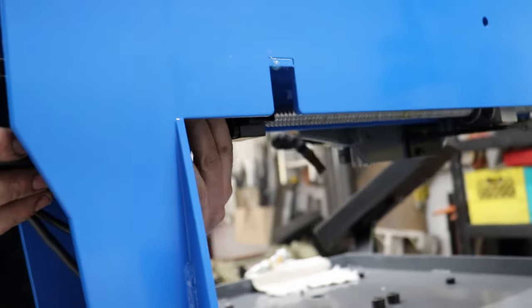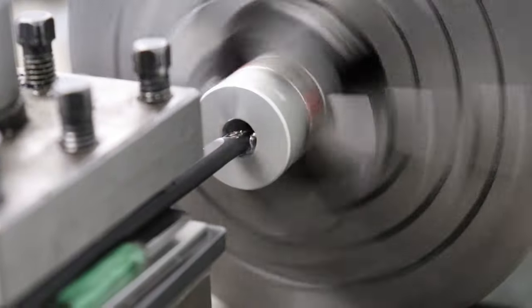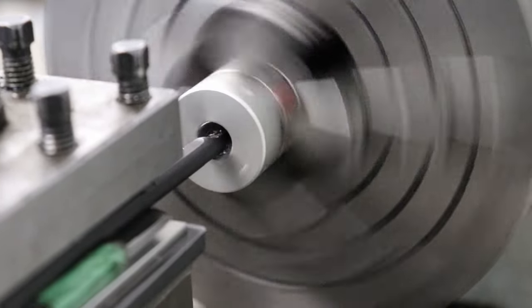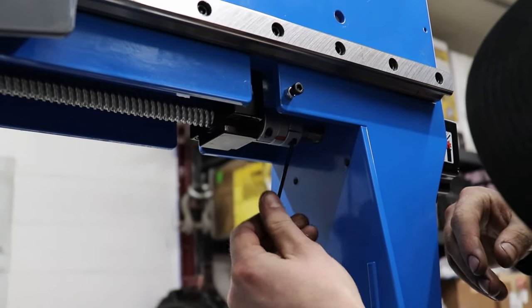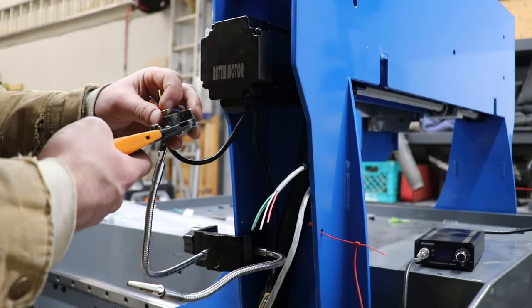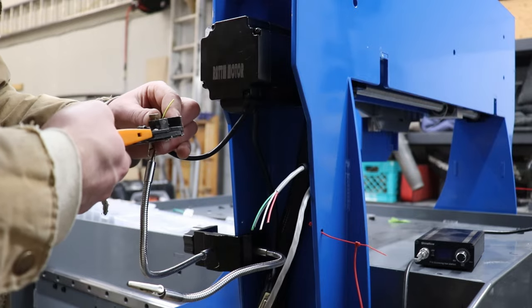The motor can then be installed with some modification to the coupler. This wouldn't have been necessary, but I bought the wrong size. This is the last of the motors to be installed, so once it's in place, I can start stripping wires and begin the lengthy task of making all the electrical connections.